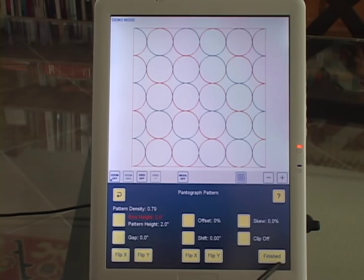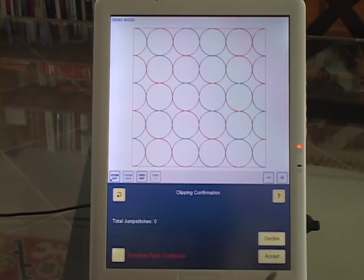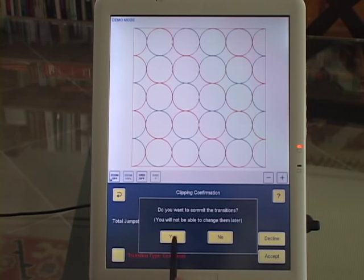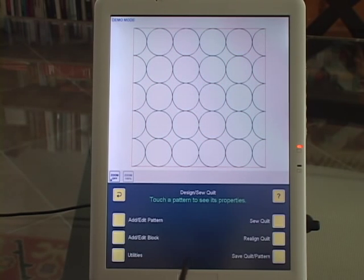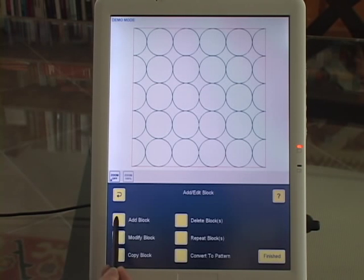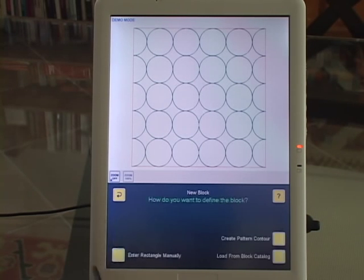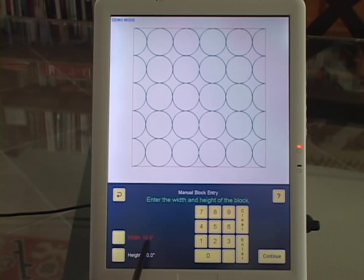Now you could stitch that out, but it doesn't look like orange peel yet, so I'm going to touch finished, accept, yes. Now at this point I'm going to add another block. Add Edit Block, Add Block, Standard Block.